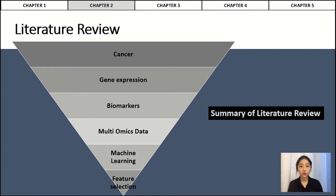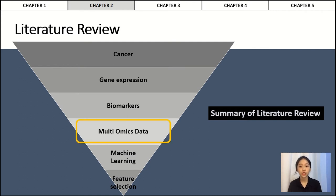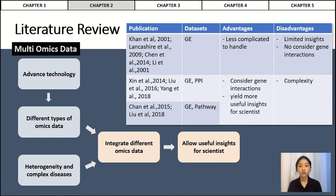Next, we enter chapter 2, where I present the summary of the literature review. The structure covers cancer disease, gene expression, biomarkers, multi or mixed data, machine learning, and feature selection. Since gene expression, biomarkers, and machine learning were already introduced in chapter 1, this chapter focuses on multi or mixed data and feature selection. Analysis of different or mixed data has been a trend to produce useful information about cellular function. Researchers believe it is significant to consider integration of different data types when studying complex diseases holistically in order to derive relationships among biomolecules.